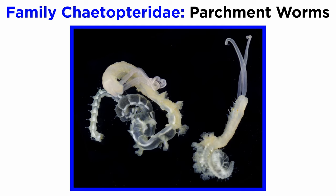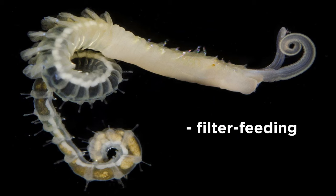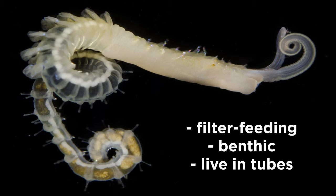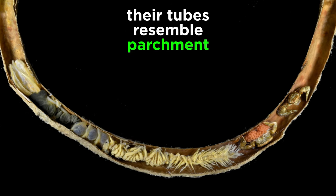Chaetopteridae, sometimes called parchment worms, are now considered to be some of the most basal and ancient members of Annelida. They are filter-feeding benthic worms that live in U-shaped tubes or tunnels buried in the sediment or hard substrate of marine environments. They get the name parchment worms because of the tubes they construct that superficially resemble and apparently feel like parchment. Though their tubes may seem unimpressive, the animals themselves have a truly unique body plan.